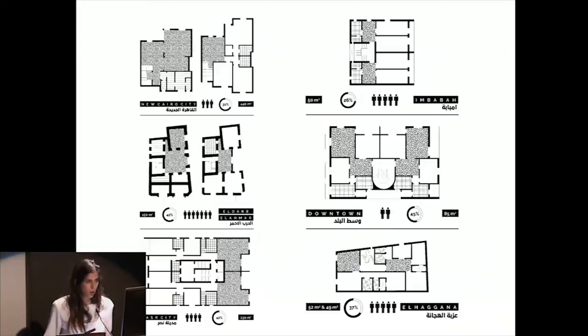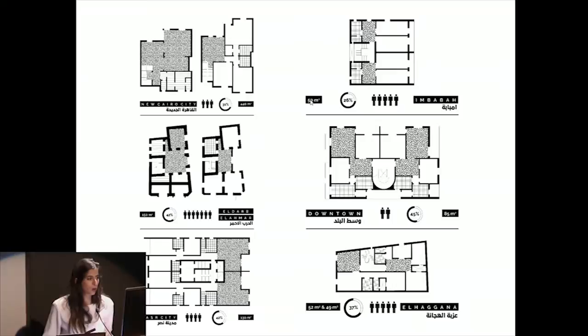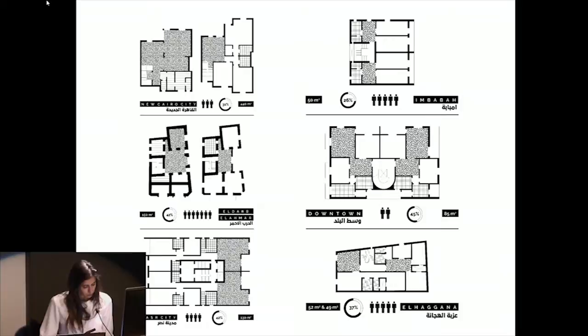This student was attempting to visualize through these diagrams the differences in development. She also continued the comparisons by comparing the size of apartments in different neighborhoods, the percentages of public space, and the number of people housed in different apartment configurations. In New Cairo City you have a 440 square meter apartment with a family of three, while in Mbeba you have a 50 square meter apartment with a larger family.